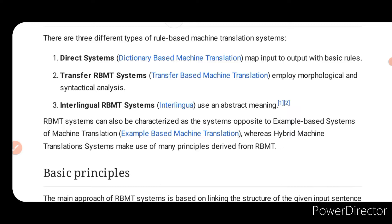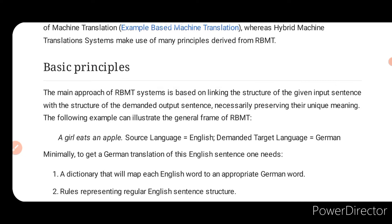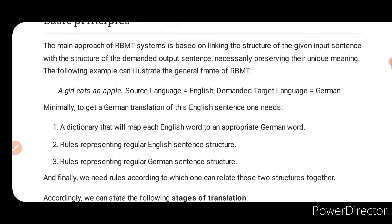Whereas hybrid machine translation systems make use of many principles derived from RBMT. The main approach of the RBMT system is based on linking the structure of the given input sentences with the structure of the demanded output sentence, necessarily preserving their unique meaning. For example, 'A girl eats an apple' is the source language in English, and the target language demanded is German. Minimally, to get a German translation of this English sentence, one needs a dictionary that maps each English word to the appropriate German word, rules representing regular English sentence structure, rules representing regular German sentence structure, and finally rules relating these two structures together.